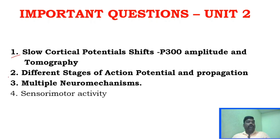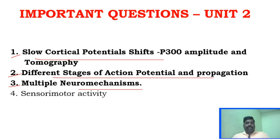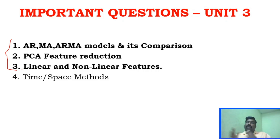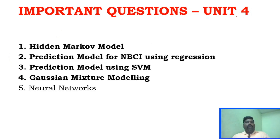For Unit 2, the important questions are: Slow Cortical Potential Shifts, Different Stages of Action Potential and Propagation, and Multiple Neuromechanisms. For Unit 3, the important questions are: ARMA models — both AR and MA individually and combined ARMA — PCA Feature Reduction, and Linear and Nonlinear Features. These are the confirmed key questions.